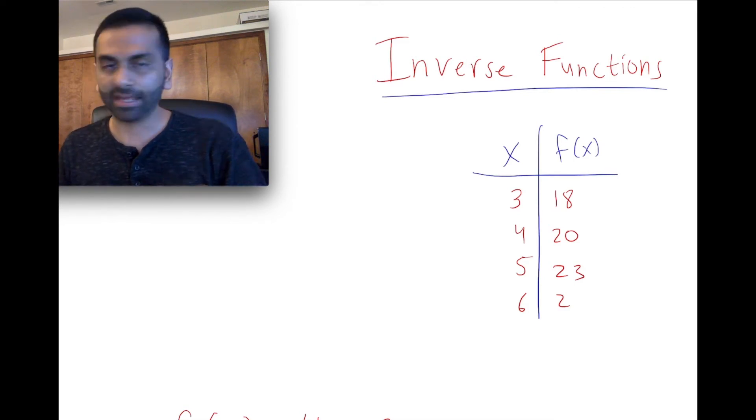So looking at, if you have a table, for example, like this, and if I were to ask you what's f of 4, you would just say, when x is 4, y is 20, so f of 4 is 20.